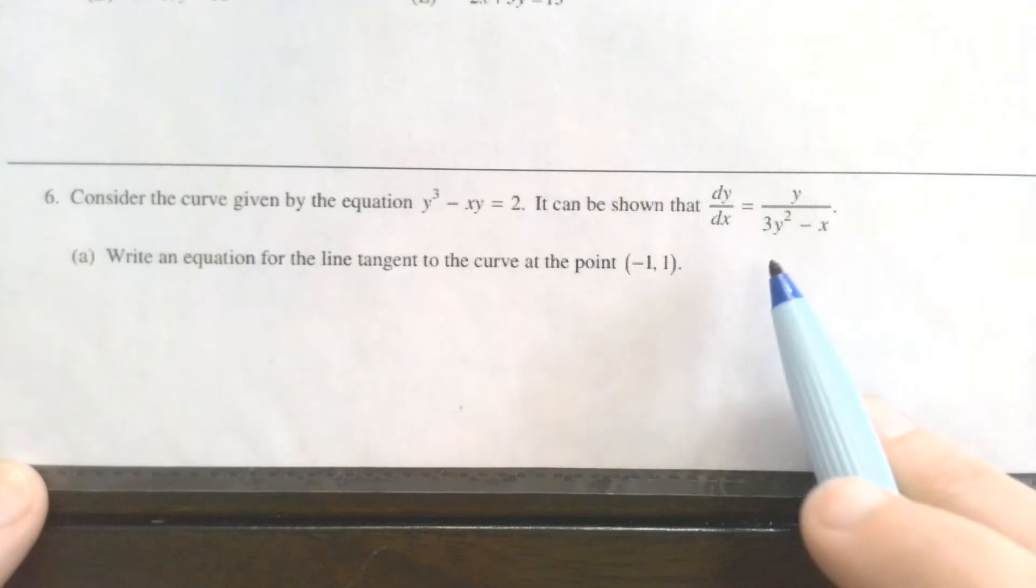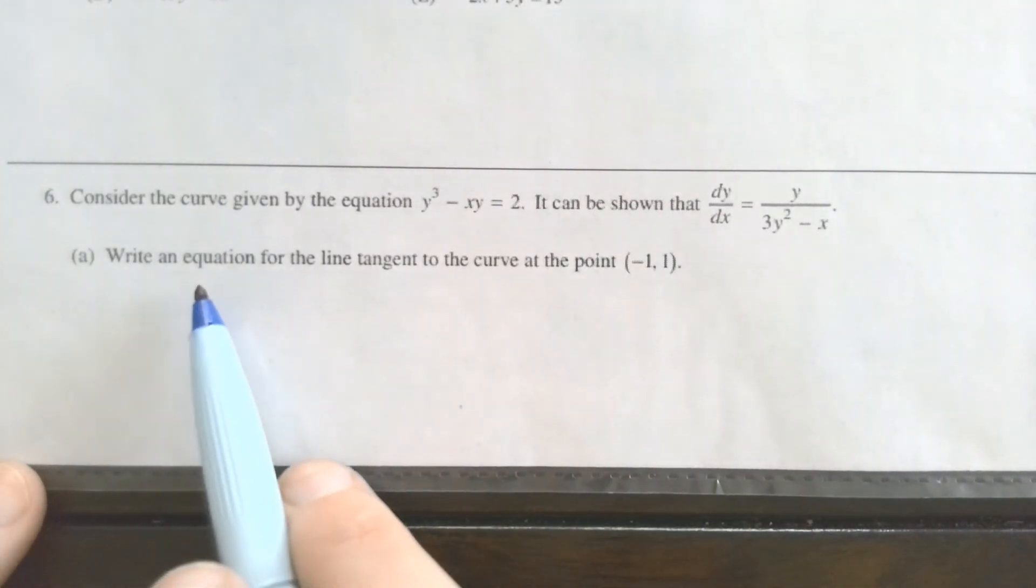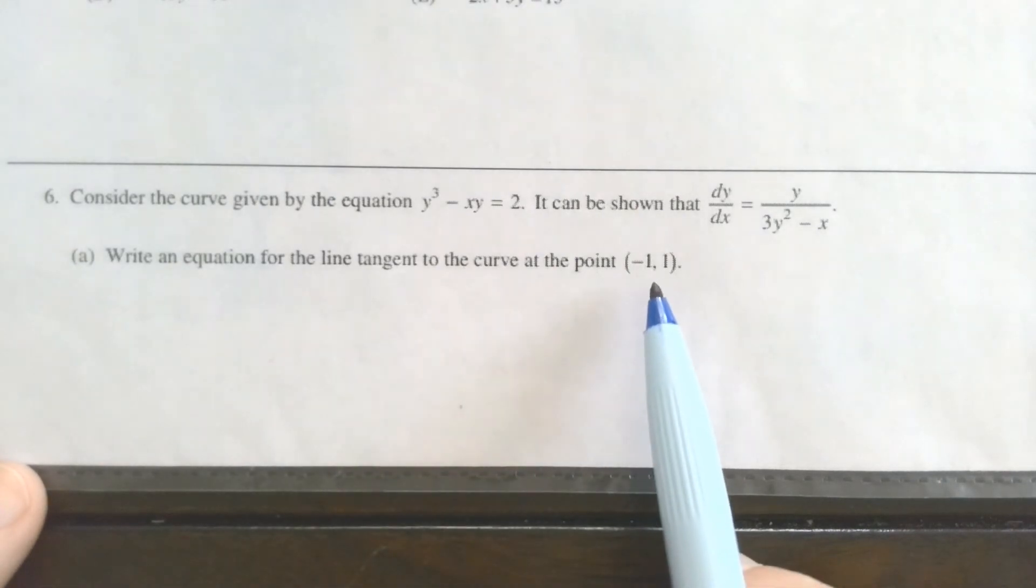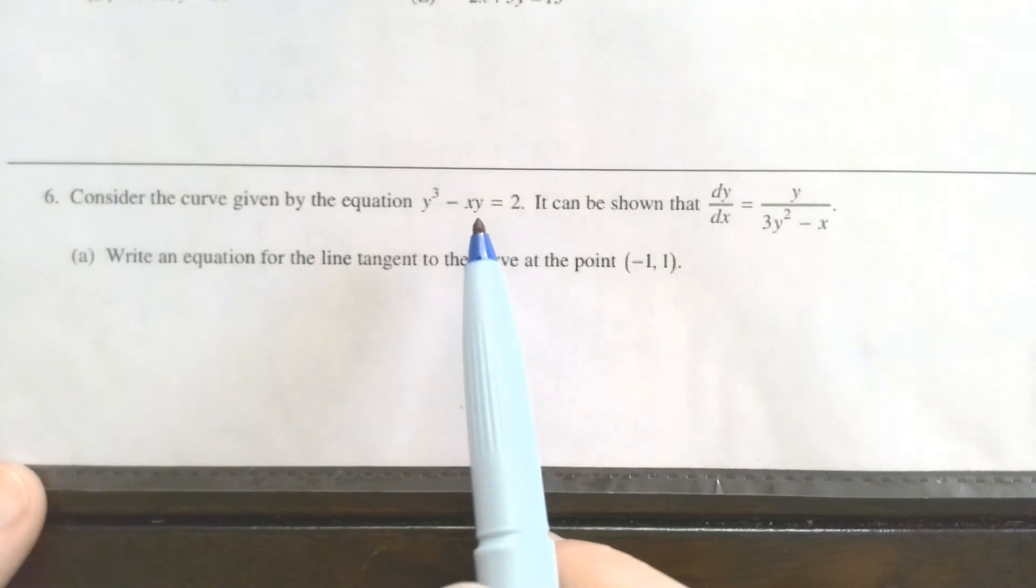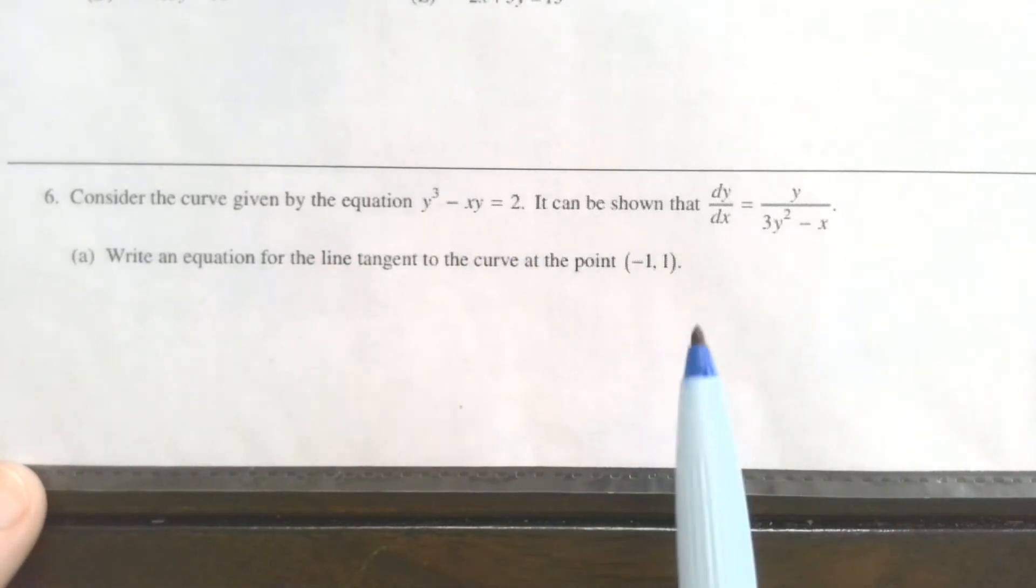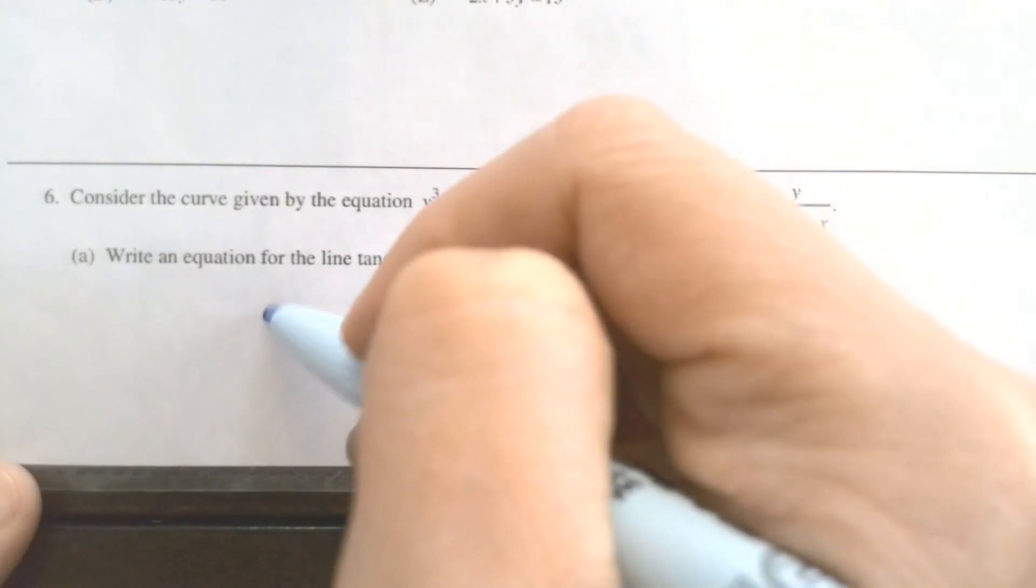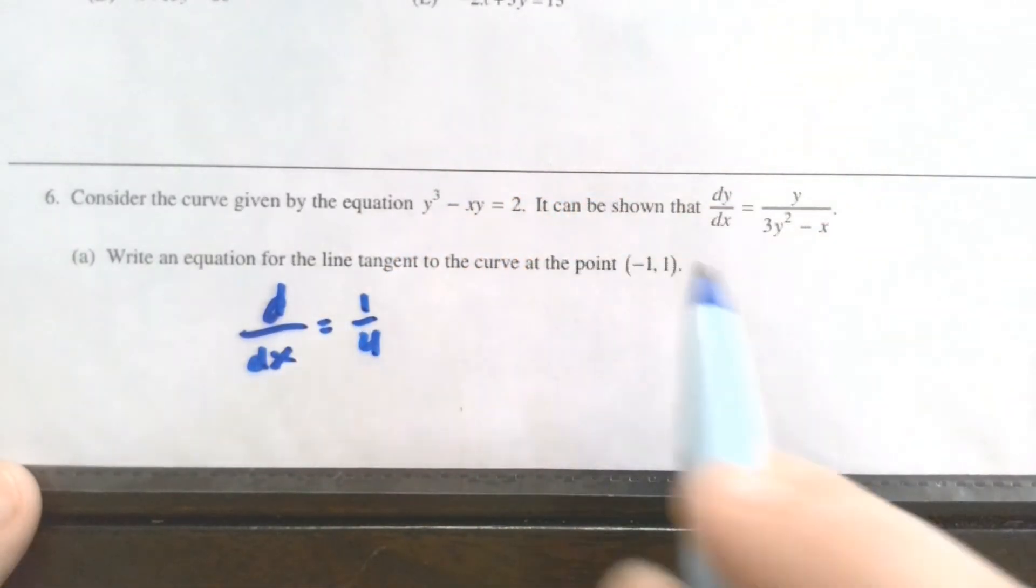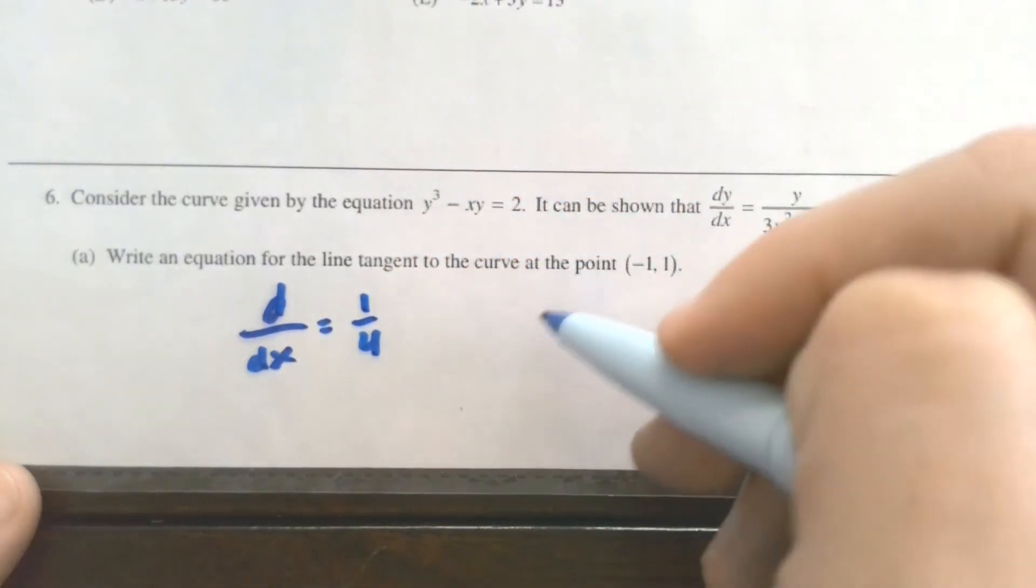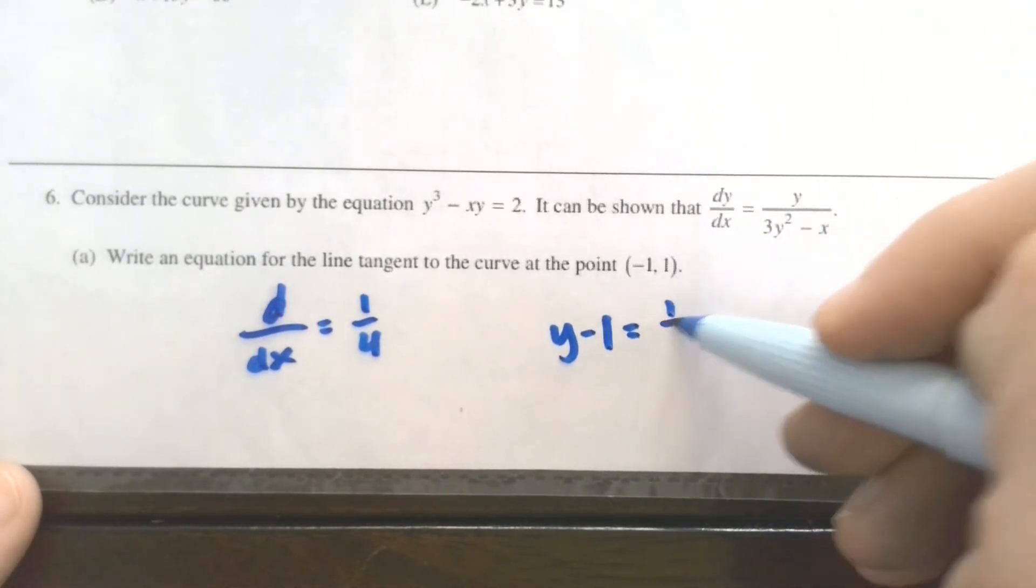Sometimes they will even give you the derivative, and in this case, they even give you the full point. So if you're going to write an equation for the tangent line at negative 1, 1, you would really be able to ignore that completely, and then just plug in your negative 1 for x, your 1 for y to see what the derivative is. It ends up being 1 fourth, if you want to try this one. And then because they gave us the x and the y value, then we're just plugging in our point and the slope into point slope form.